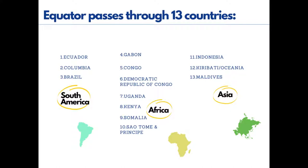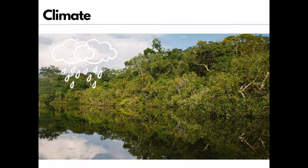The equator passes through 13 countries across the continents of South America, Africa, and Asia. In South America, it passes through Ecuador, Colombia, and Brazil. In Africa, it passes through Gabon, Congo, Democratic Republic of Congo, Uganda, Kenya, São Tomé and Príncipe, and Somalia. In Asia, it passes through Maldives, Indonesia, and Kiribati, which is also known as Oceania.